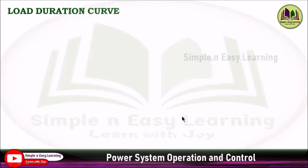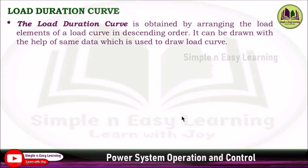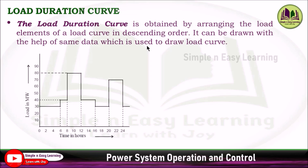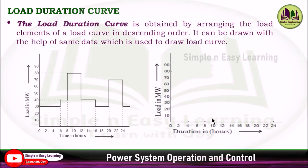The load duration curve is obtained by arranging the load elements of the load curve in descending order, and it can be drawn with the same data used to draw the load curve. We will now draw the load duration curve based on the data available in the load curve, arranging values in descending order.